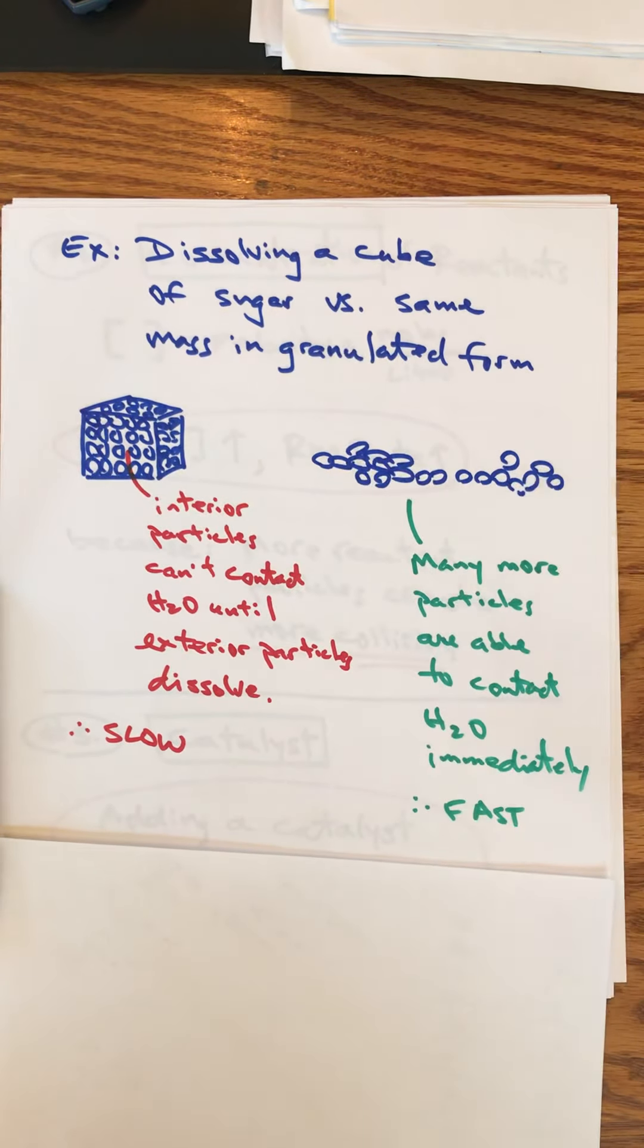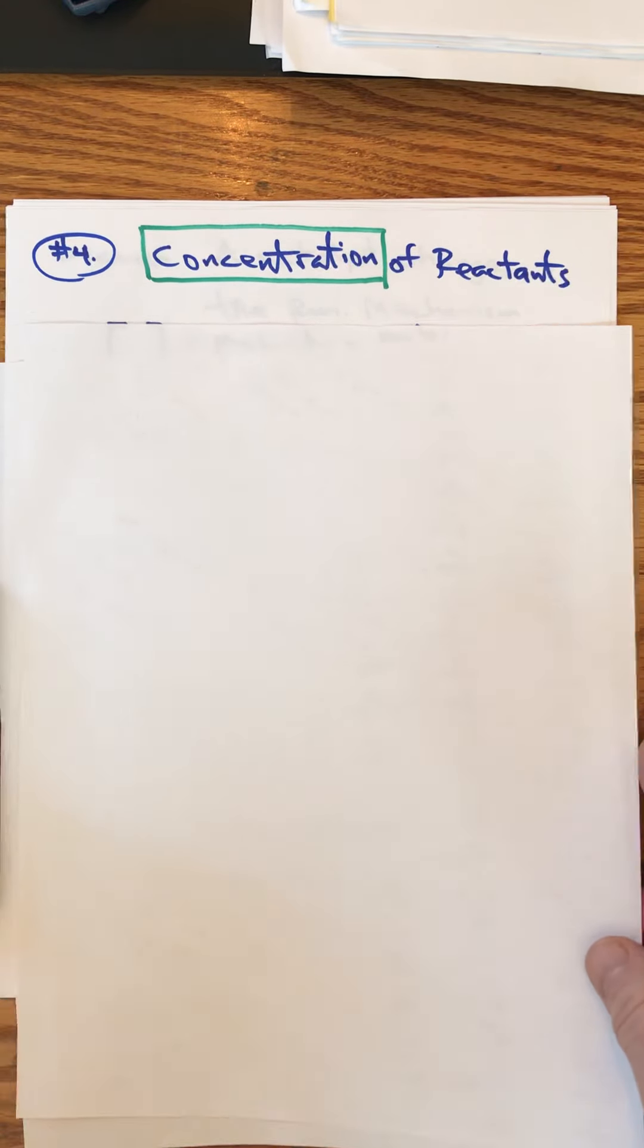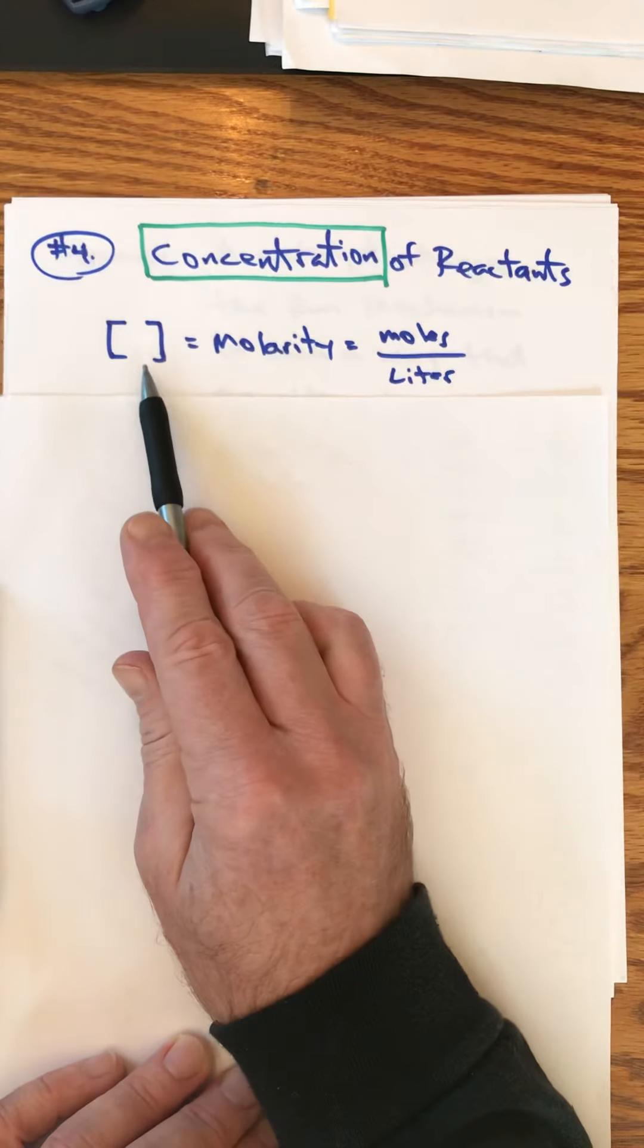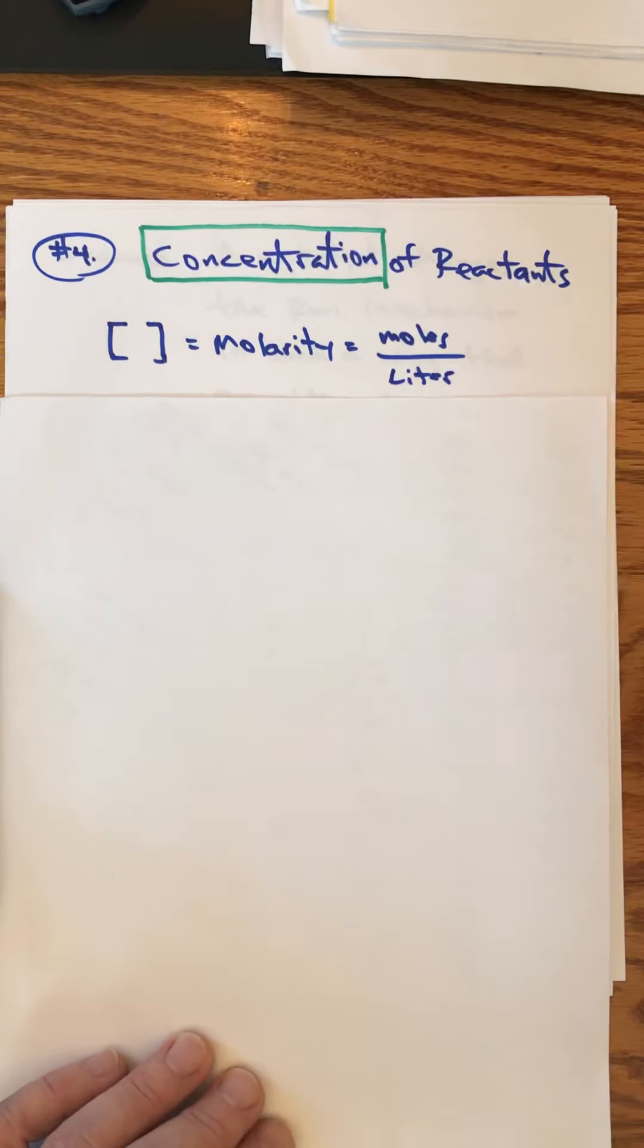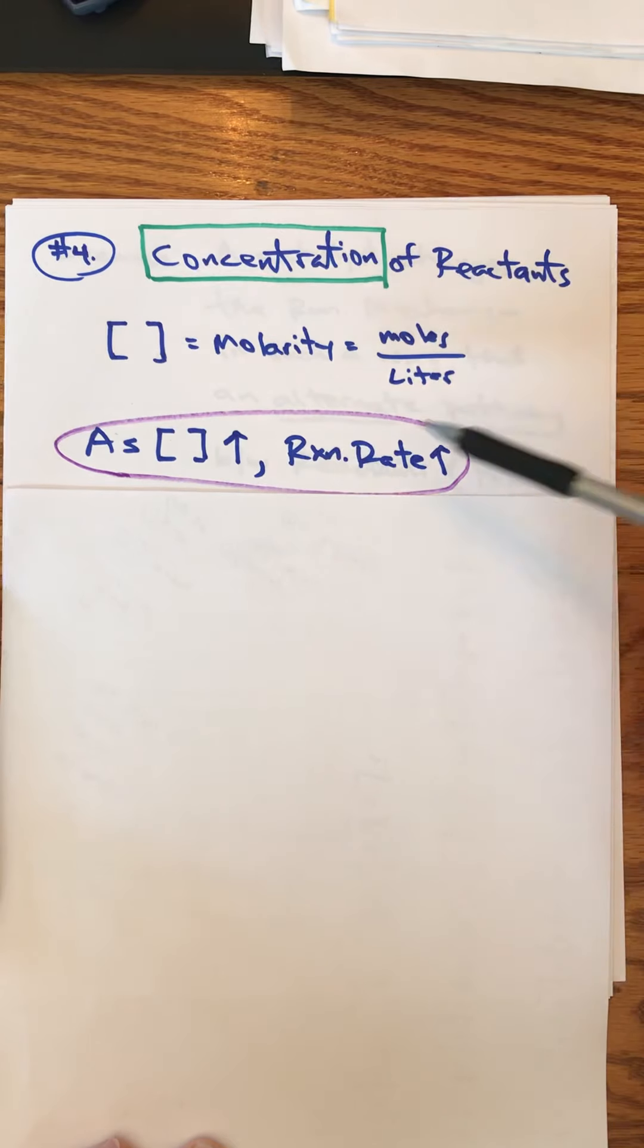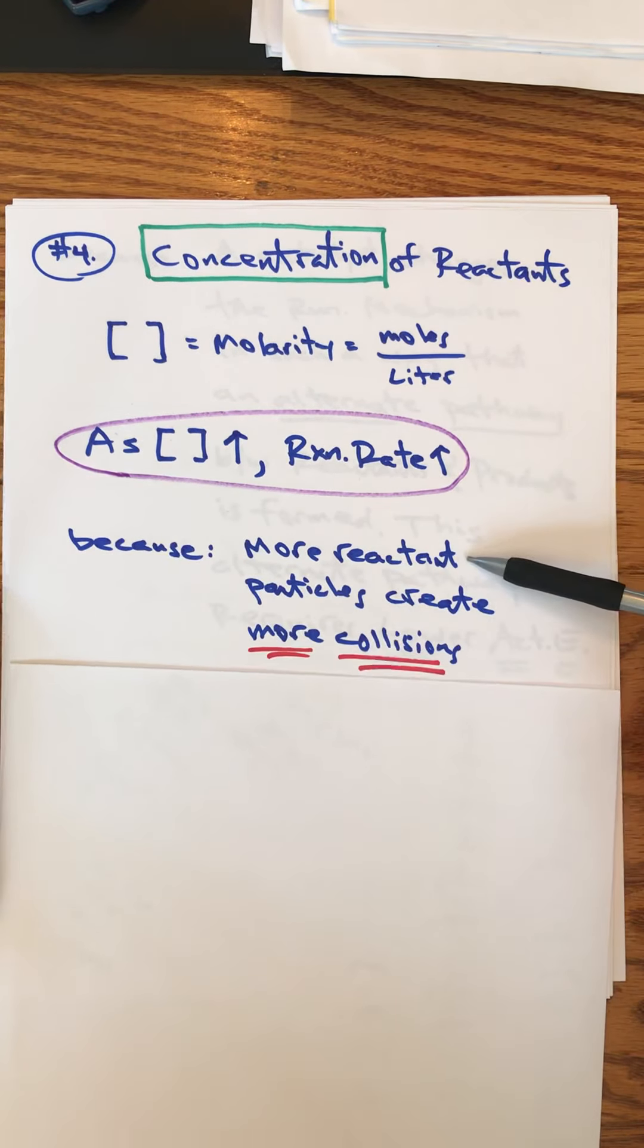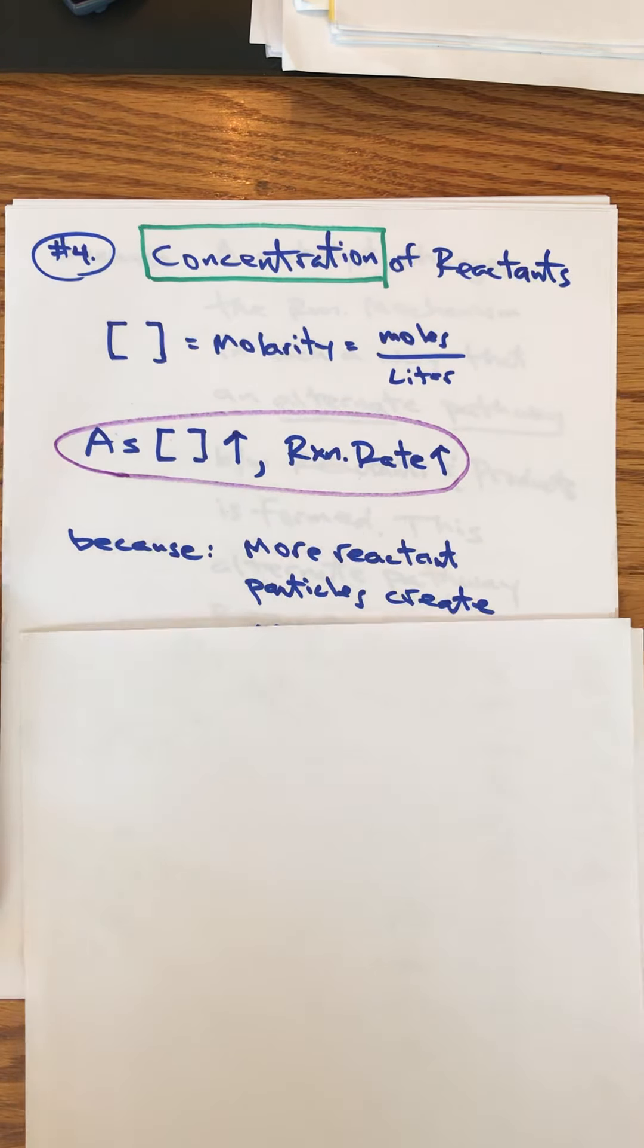Concentration of reactants - brackets, we're going to be using this a lot for this part of the unit. The brackets means molarity, moles per liter. State the relationship: as the concentration of the reactants increases, the reaction rate increases. Why? You have more reactant particles so you have more collisions. Just having more particles gives you more collisions, gives you a faster rate of reaction.